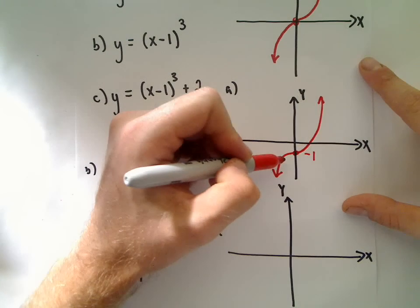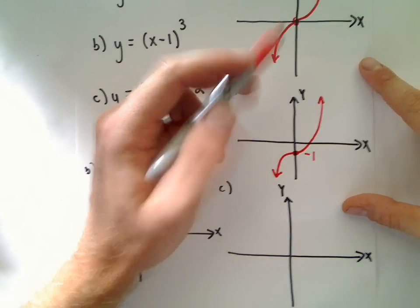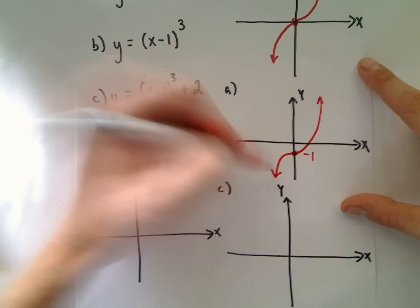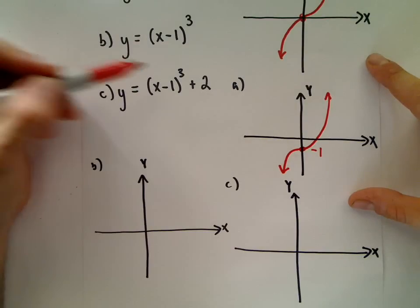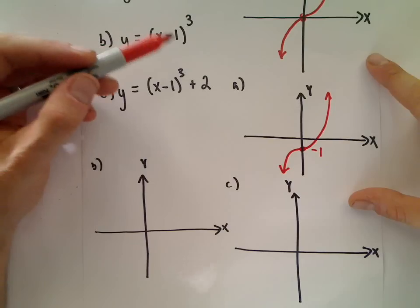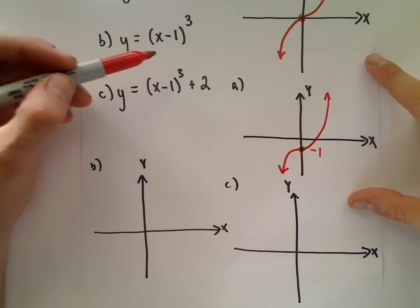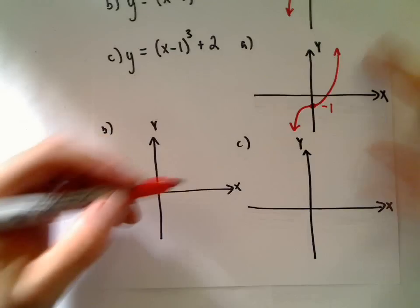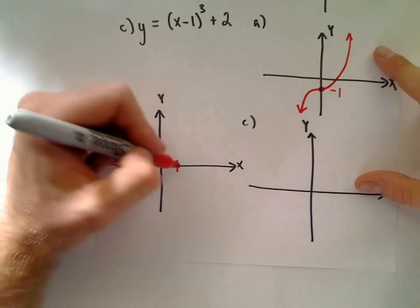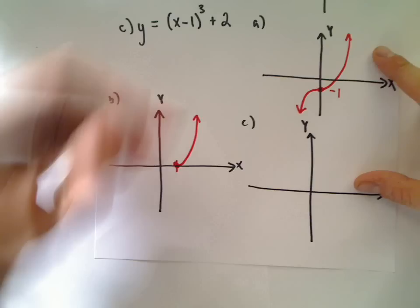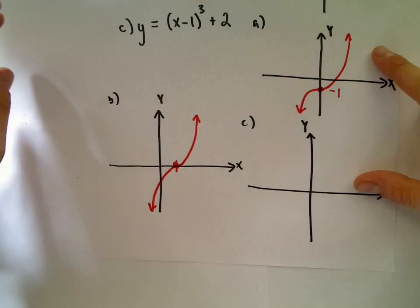For part b, (x-1)³, I replace x with x-1. This is a horizontal shift - it shifts 1 unit to the right. Instead of going through (0, 0), it goes through (1, 0), but still has the same basic shape as x³.